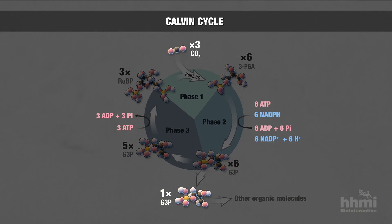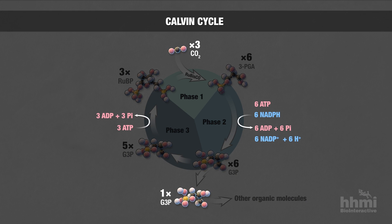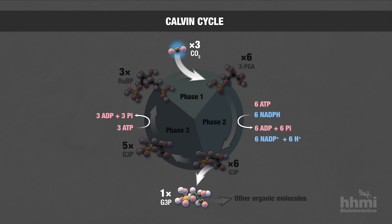Notice that in the Calvin cycle, the energy from ATP and NADPH produced in the light reactions is used to generate one G3P molecule from three carbon dioxide molecules. In this process, the electrons lost from NADPH are accepted by the carbons from carbon dioxide molecules, which are the ultimate electron acceptors of photosynthesis.